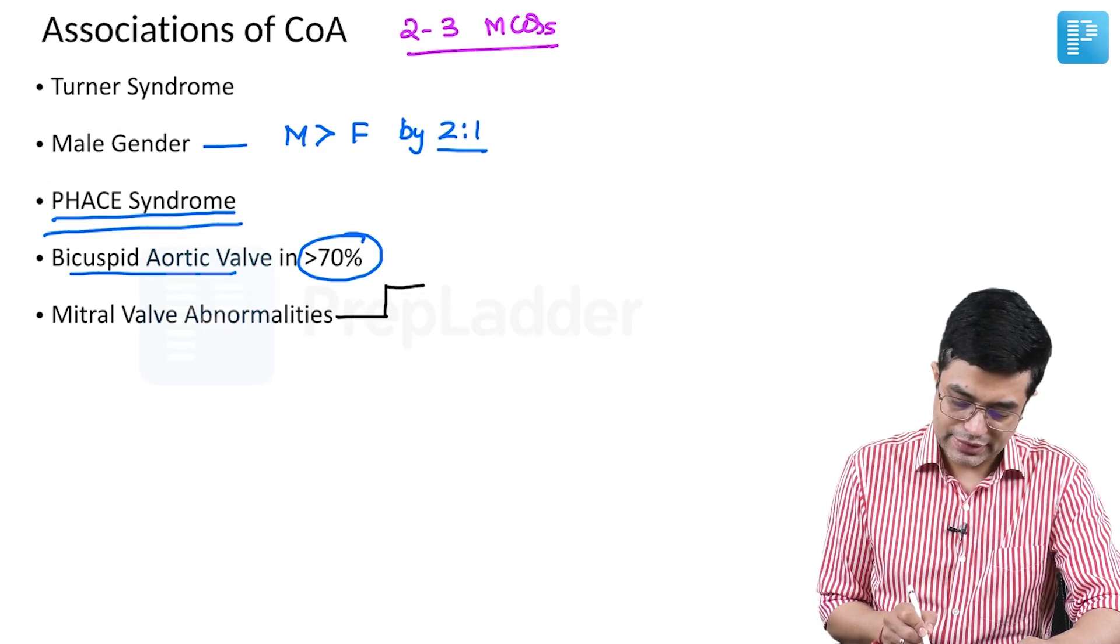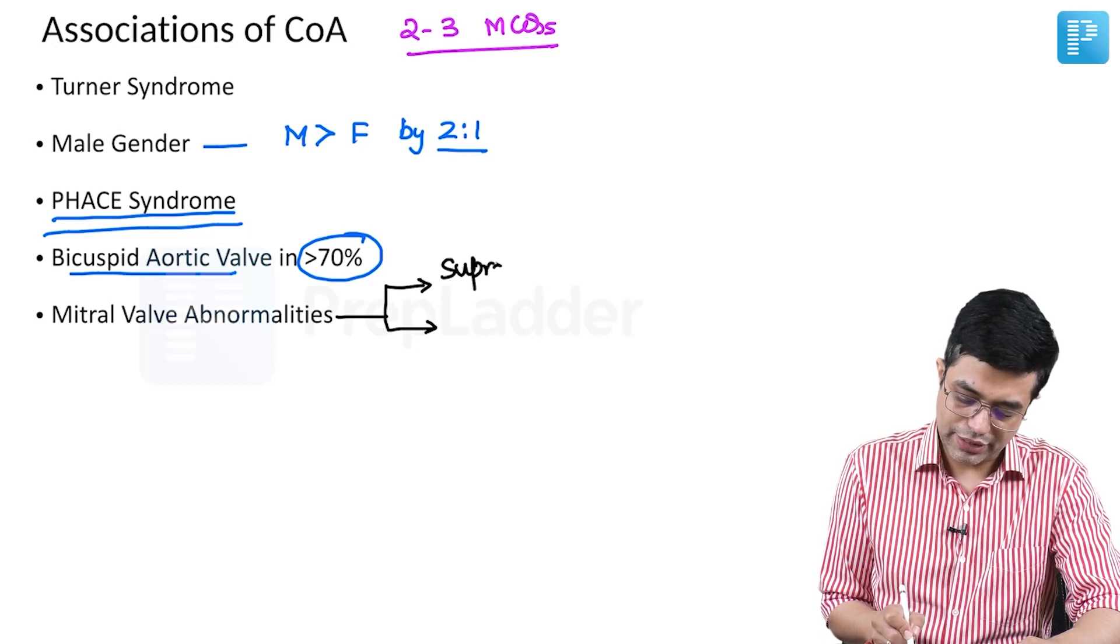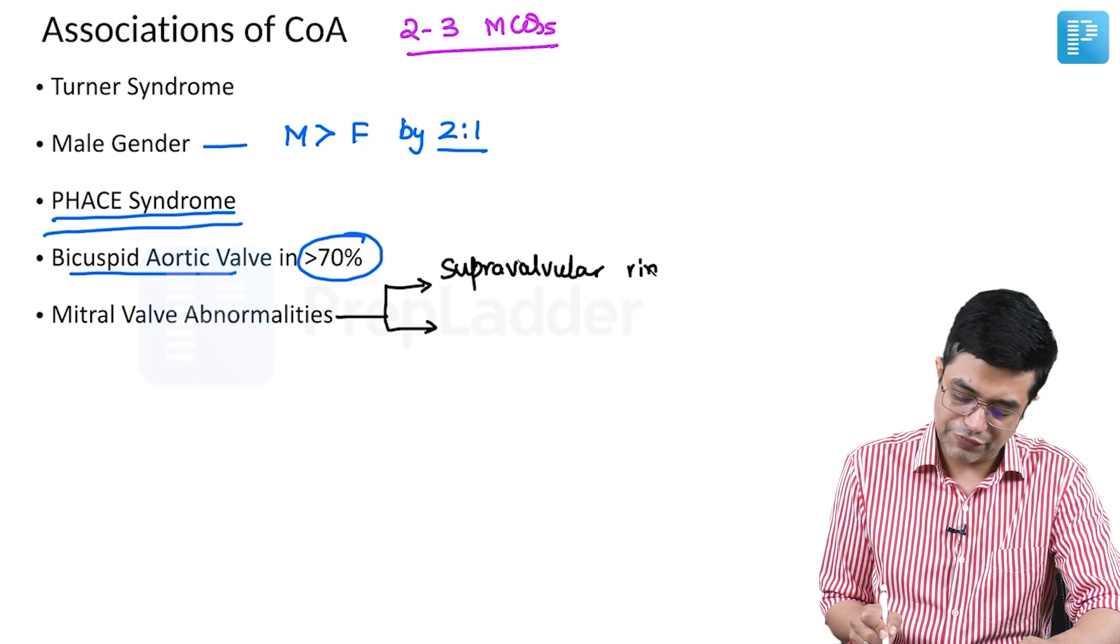Two important mitral valve abnormalities are strongly associated with coarctation. First is a supravalvular ring. There is a ring-like structure present above the mitral valve.